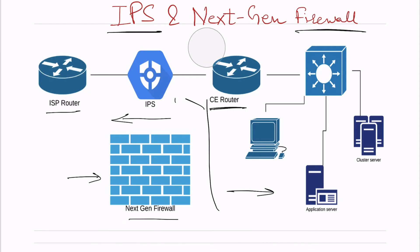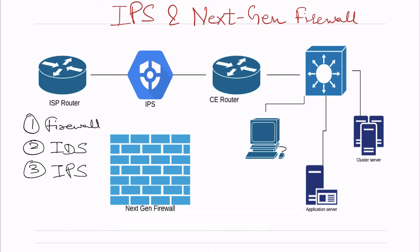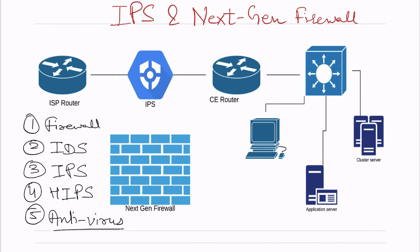Before I cover next gen firewall and IPS, let me tell you some of the security appliances we frequently use in our network. The first one is firewall, second is IDS — intrusion detection system, then there is IPS which I will be covering, then there is HIPS which is a type of IPS, and then there is antivirus software.